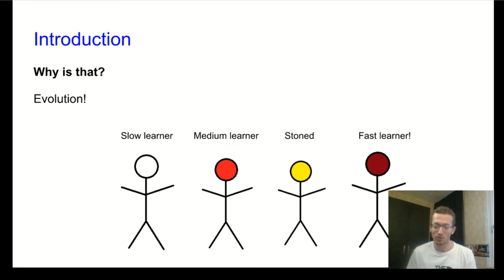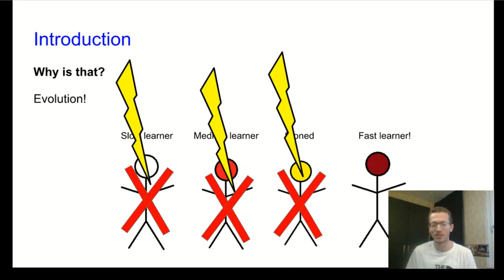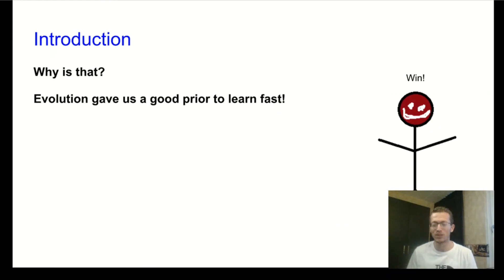You can already imagine that the fast learner may have some advantage over the other individuals, which allows it to reproduce itself and then there will be more and more fast learners. So evolution will cancel out the slower learners and we will end up with the fast learners.